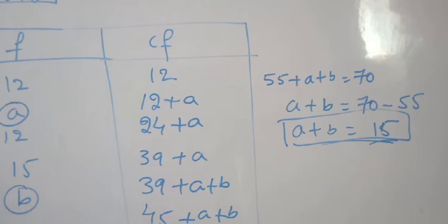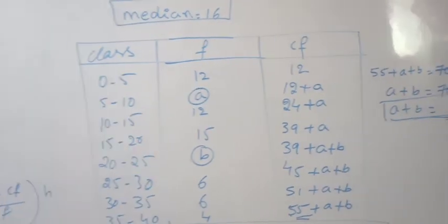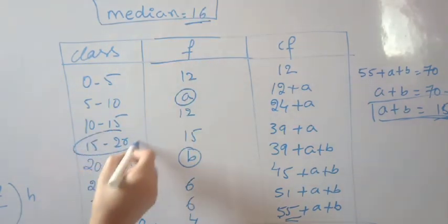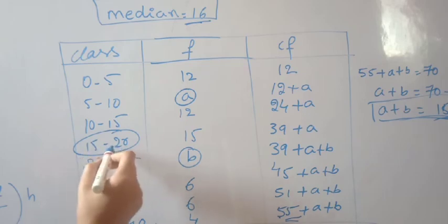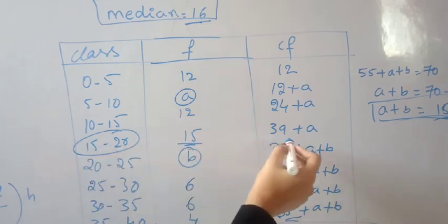Now we use the median formula to find A and B. The median is 16, so we use the 15-20 group.